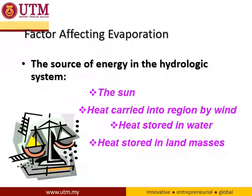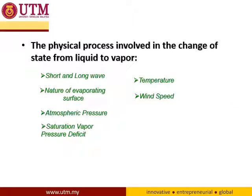What are the factors affecting evaporation? They relate to energy — the source of energy in the hydrologic system — for example, the sun, heat carried into a region by wind, heat stored in water, and heat stored in land masses. The physical processes involved in the change of state from liquid to vapor include short and long wave radiation, the nature of the evaporating surface, and atmospheric pressure. The evaporation rate may be different near the ocean compared to a mountain area. Other factors include saturation vapor pressure deficit, temperature, and wind speed. Short wave is radiation we can see; long wave is radiation we cannot see. Both affect evaporation.